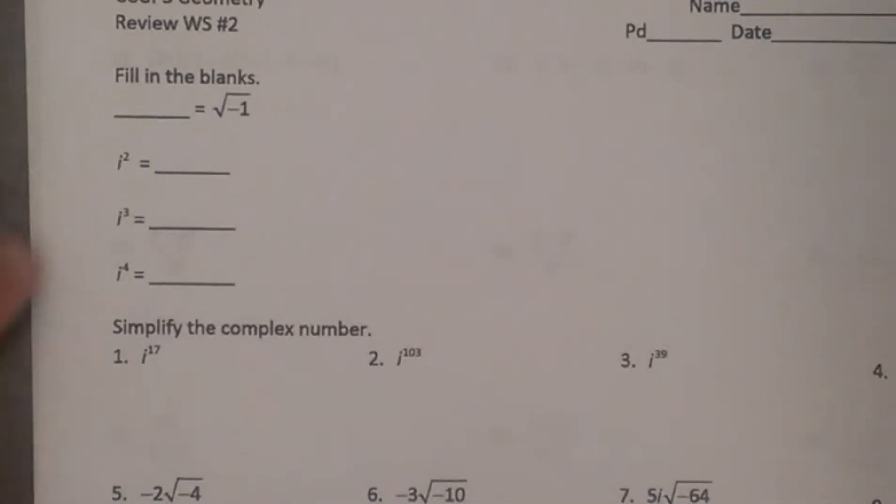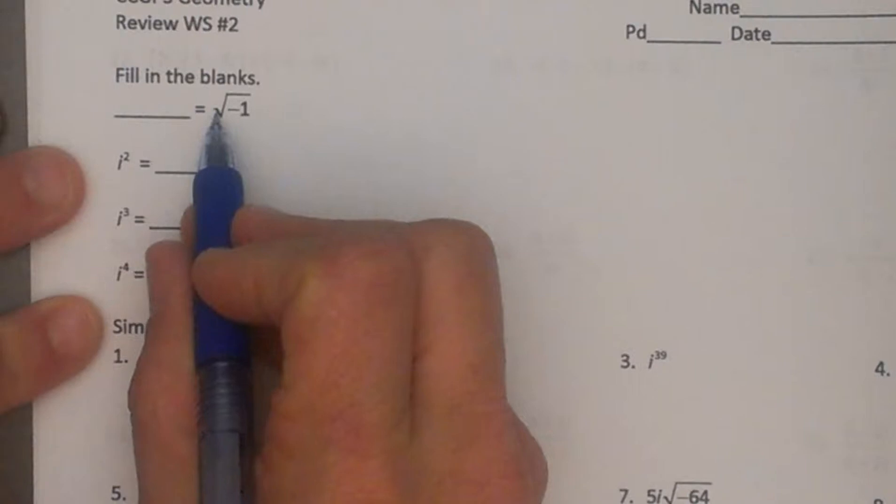Hi and welcome to Mimu Math. Today we are looking at the patterns of i. Let's write down the four values with the pattern of i. i is equal to the square root of negative one.